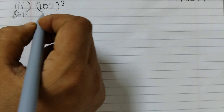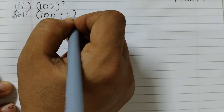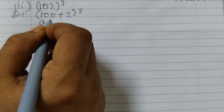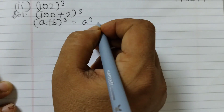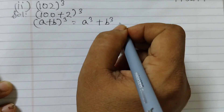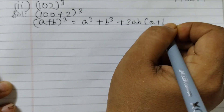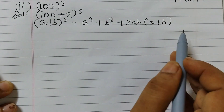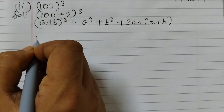The second one is 102 cubed. 102 can be written as (100 + 2) cubed. Here we will use the identity (A + B)³ = A³ + B³ + 3AB(A + B). When there is a minus, it's all minus; when there is a plus, it's all plus — that way you can remember.